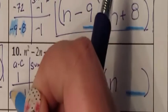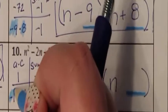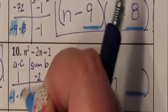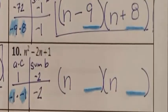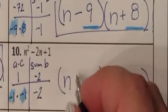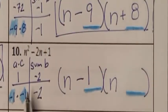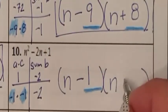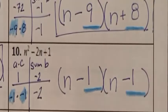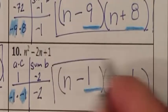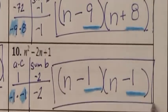Negative 1 times negative 1 multiply to give me 1, and they add to give me negative 2. So the two numbers I needed were negative 1 and negative 1. Here is minus 1 for the first negative 1, and here is minus 1 for the second. And I just factored number 10.